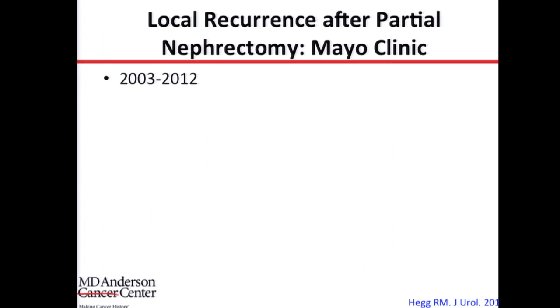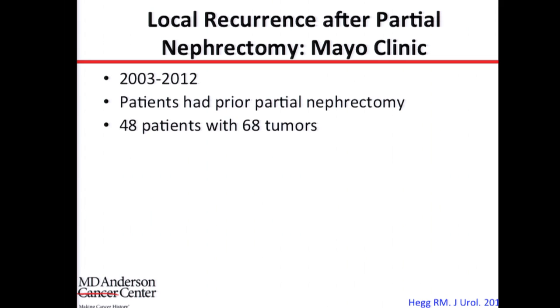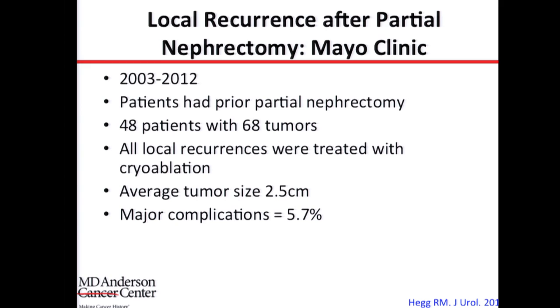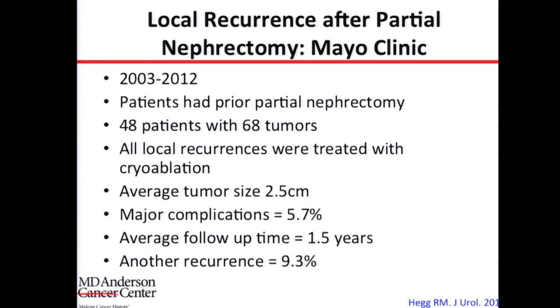The Mayo Clinic series covered about nine years. These are patients who had partial nephrectomy first, then recurred. 48 patients were reported, and in this series the recurrent tumors were treated with ablation therapy rather than a second operation — essentially using ablation to salvage the failure of the first procedure. Tumor size was small, as it should be for ablation. The complication rate was about 5% to 6%, and follow-up was 1.5 years. About 9% had another recurrence, showing that this therapy works when patients are well selected and tumors are small and anatomically suitable.